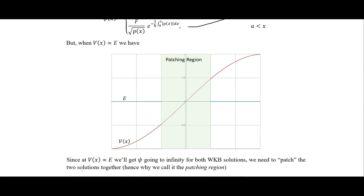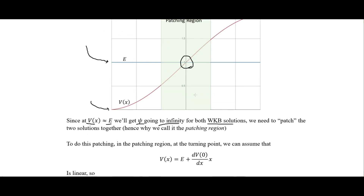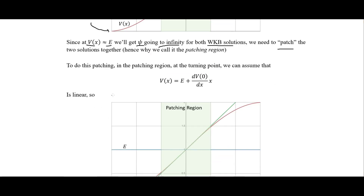This is where the potential energy is roughly equal to the energy of the particle. In blue is the energy of the particle and in red is the potential energy. We're interested in that turning point and the region around it. At this patching region, the WKB wave function goes to infinity for both solutions, so we need to patch the two solutions together.